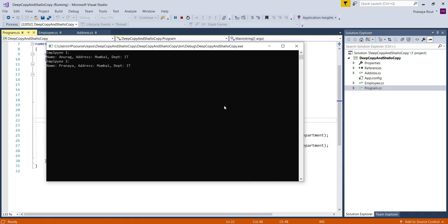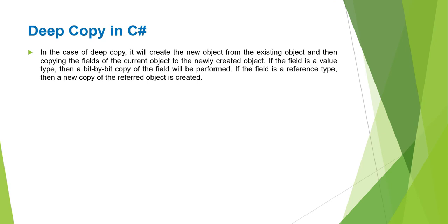Now let us understand deep copy in C#. In the case of deep copy in C#, it will create a new object from the existing object and then copy the fields of the current object to the newly created object. If the fields are value type, a bit-by-bit copy of the field will be performed. If the field is a reference type, a new copy of the referenced object is created.